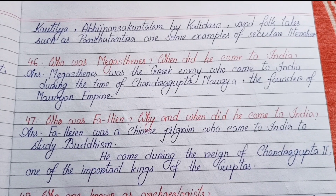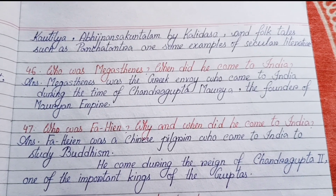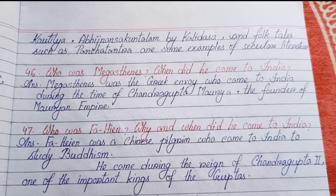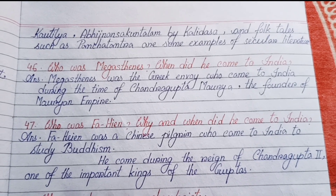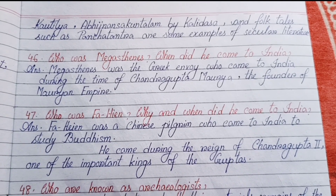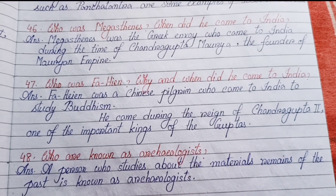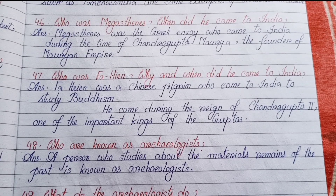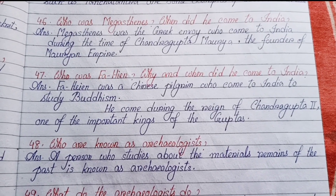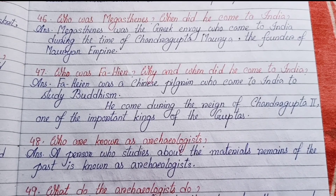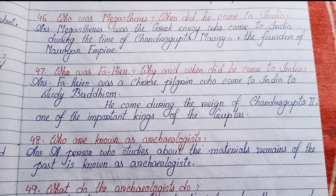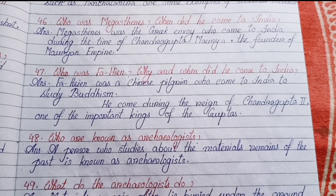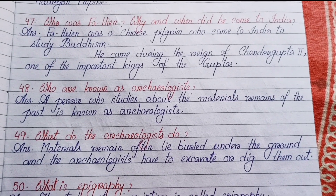Number forty-six: Who was Megasthenes and when did he come to India? Megasthenes was a Greek envoy who came to India during the time of Chandragupta Maurya, the founder of the Maurya Empire. Number forty-seven: Who was Fa-Hien, why and when did he come to India? Fa-Hien was a Chinese pilgrim who came to India to study Buddhism. He came during the reign of Chandragupta II, one of the important kings of the Guptas.